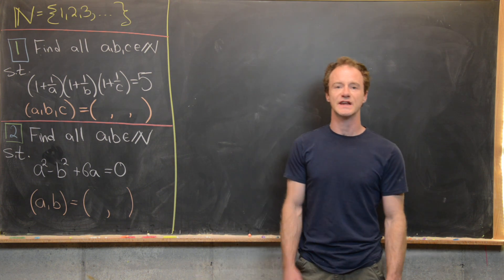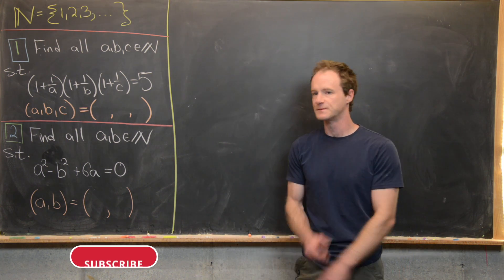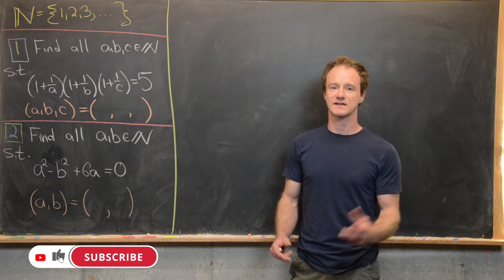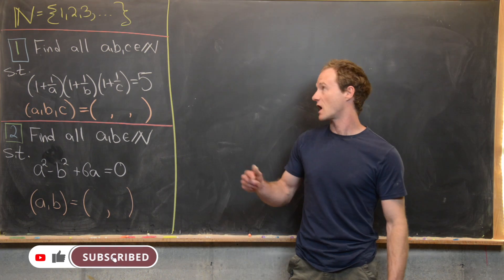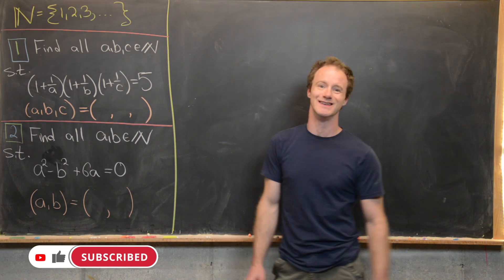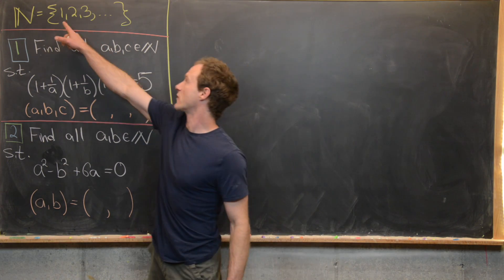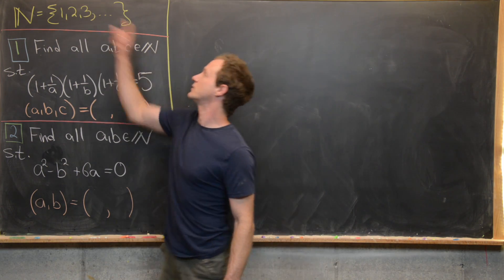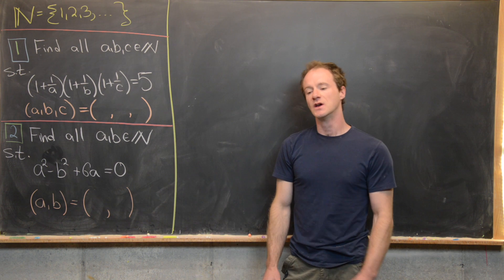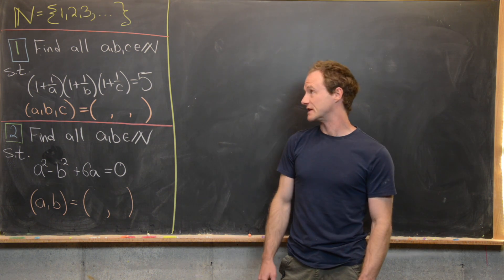Here we're going to solve two interesting equations over natural numbers. Before the discussion starts in the comments, I'm going to use the natural numbers not to include zero. So in other words, one, two, three, and so on and so forth — sometimes called the positive integers.